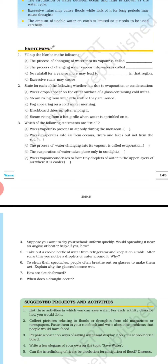Eighth question: when does a drought occur? When an area does not receive rainfall for a period of a year or more, the soil continues to lose water by evaporation and transpiration. The soil becomes dry and groundwater may also become scarce, which may lead to drought. This was all about the exercise of Chapter 14 — if you have any doubt you can ask at any time. Thank you.